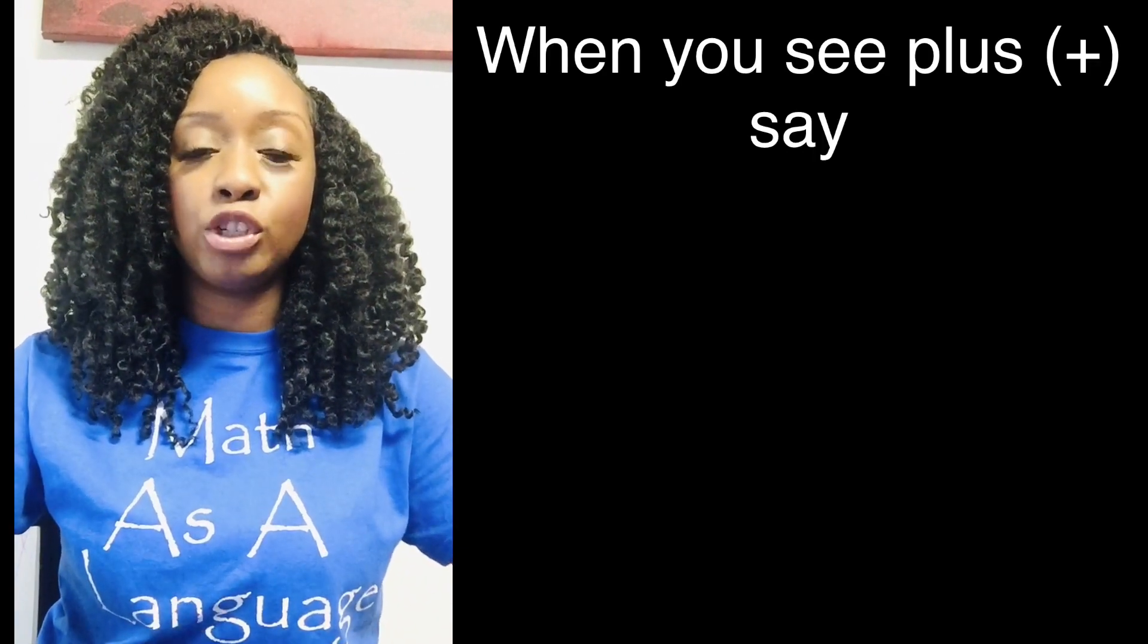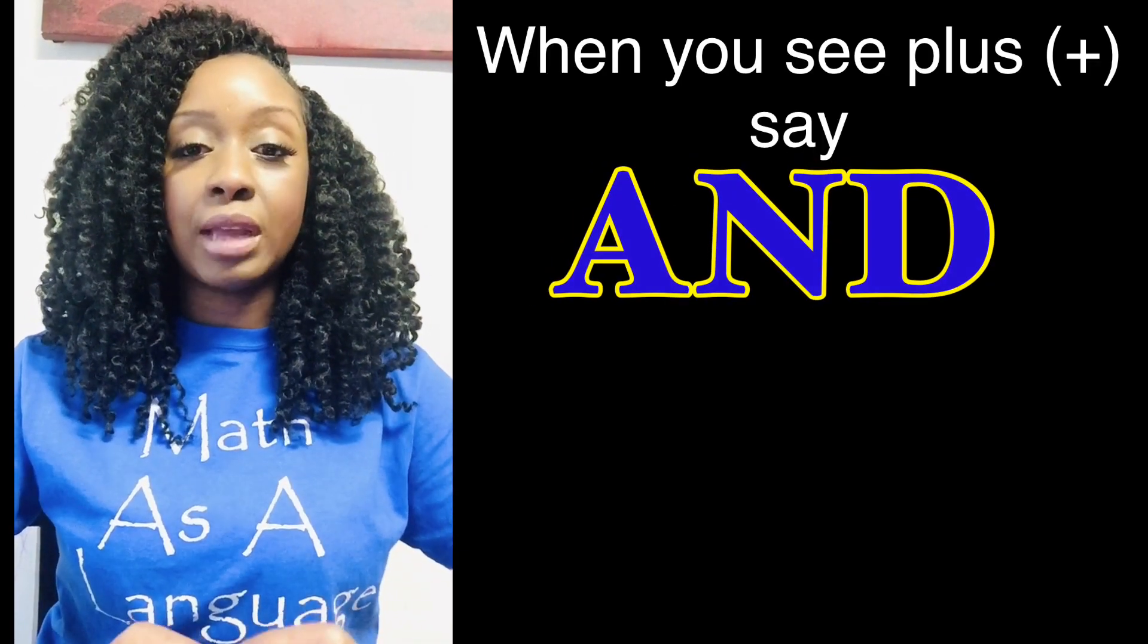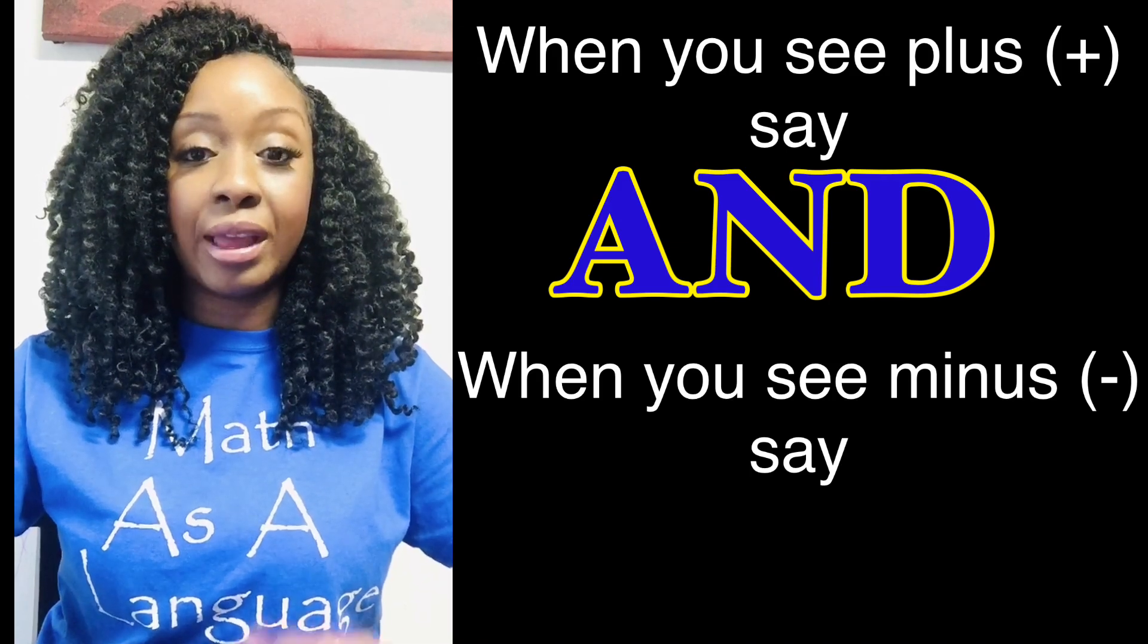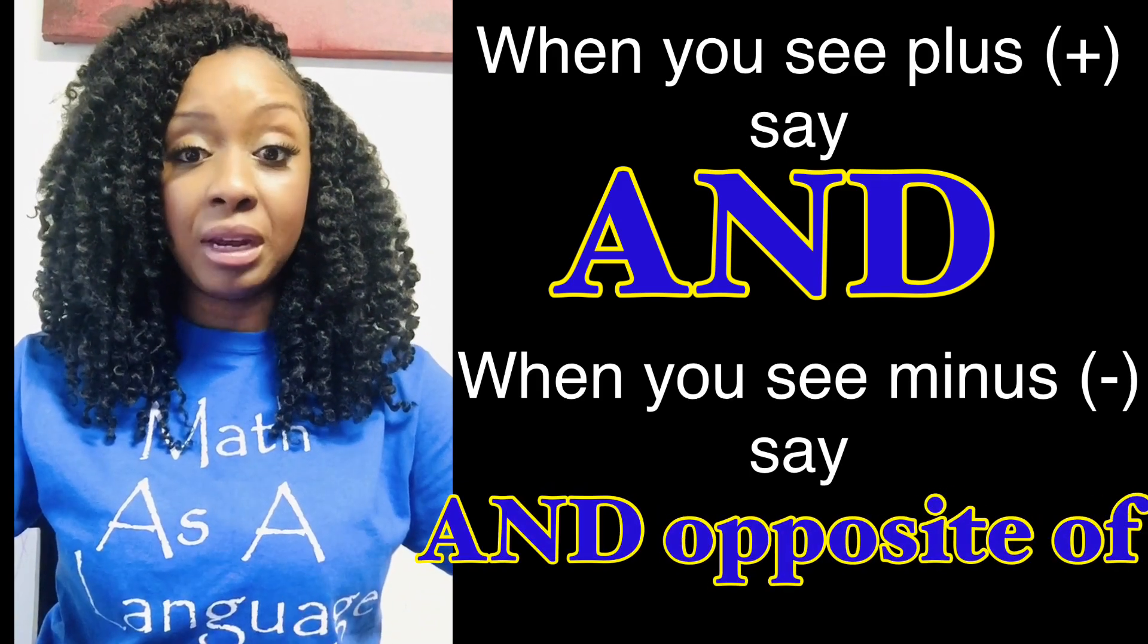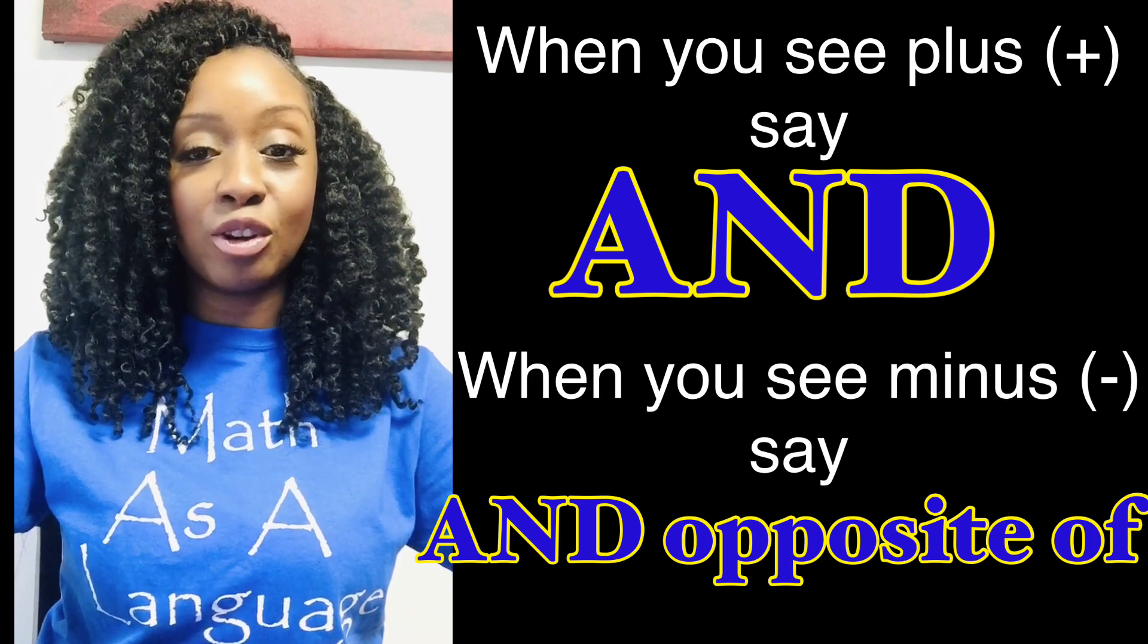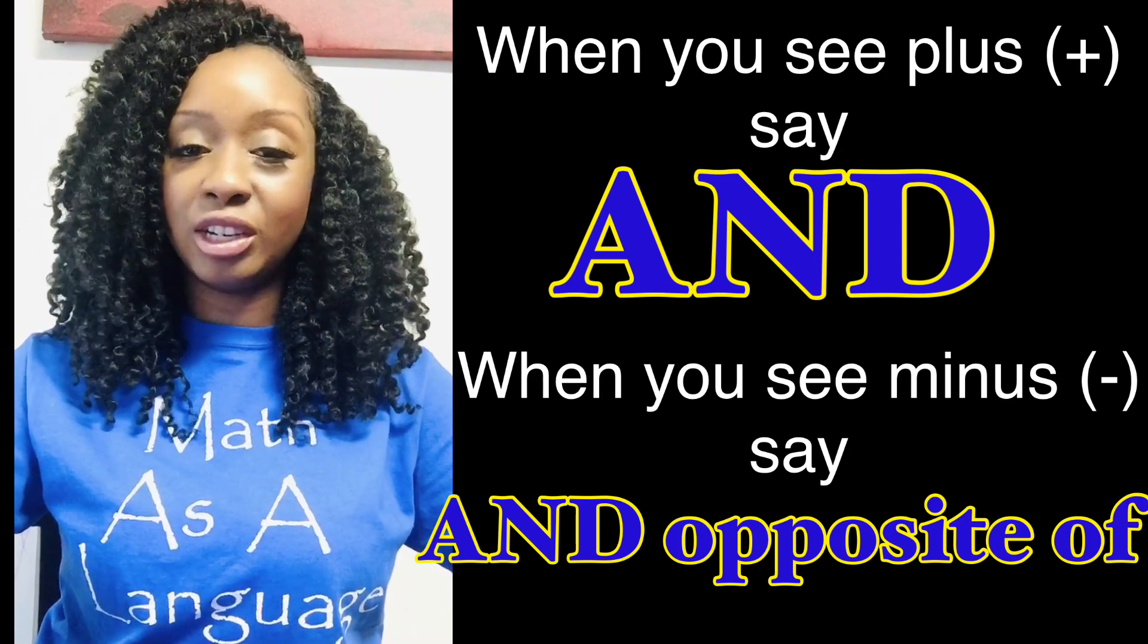Now for the operation vocabulary. When you see a plus sign in the place you will say and. When you see a minus sign in its place you will say and the opposite of, meaning whatever is behind the minus sign you're going to do the opposite color that you see.